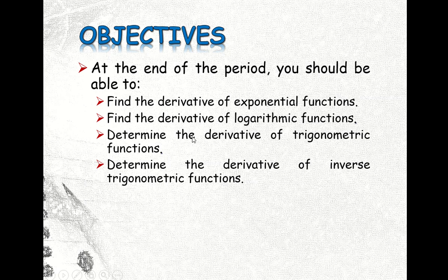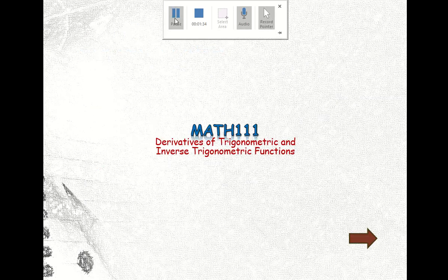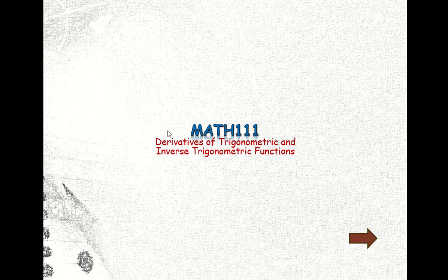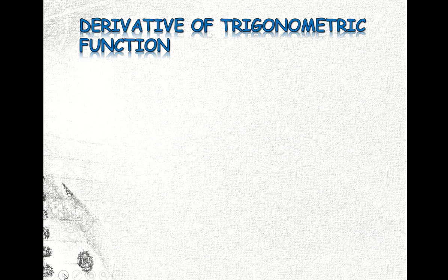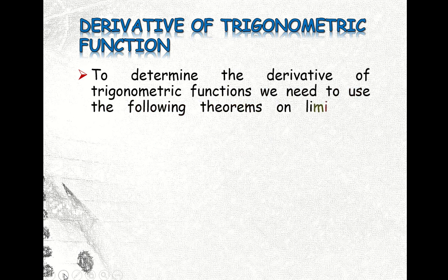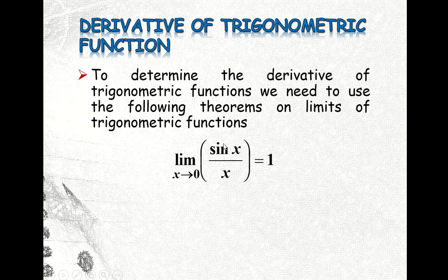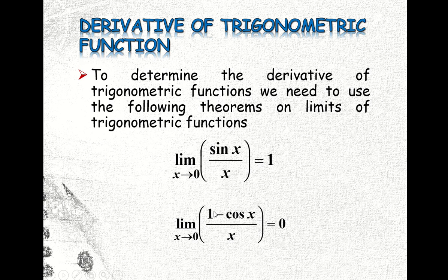So I will begin with the derivative of the trigonometric functions. To determine the derivative of trigonometric functions, we need to use the following theorems on limits of trigonometric functions. The limit of sin(x) divided by x as x approaches 0 is equal to 1 — remember this, it is a very important theorem. And the limit of the quantity (1 minus cos(x)) divided by x as x approaches 0 is equal to 0.